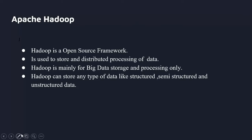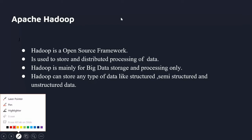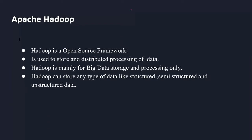In Hadoop, there are two important components. For storage, HDFS is used, and for processing, MapReduce is used. HDFS stands for Hadoop Distributed File System. In this file system, you can store a huge amount of data.